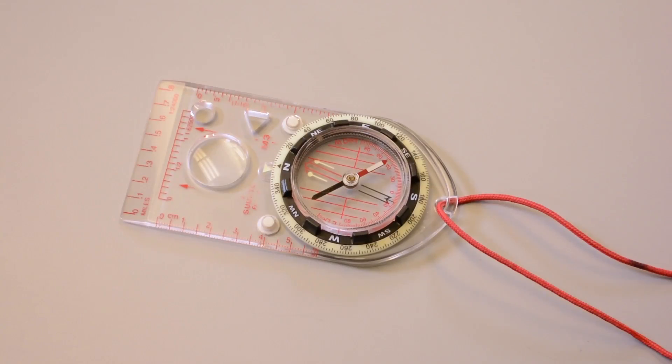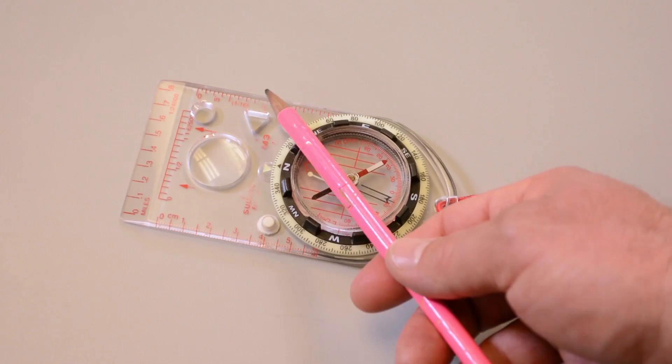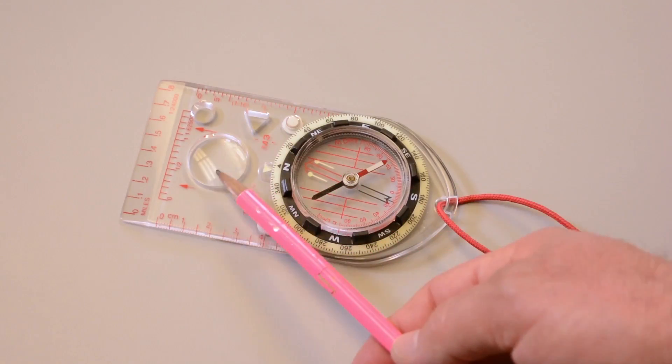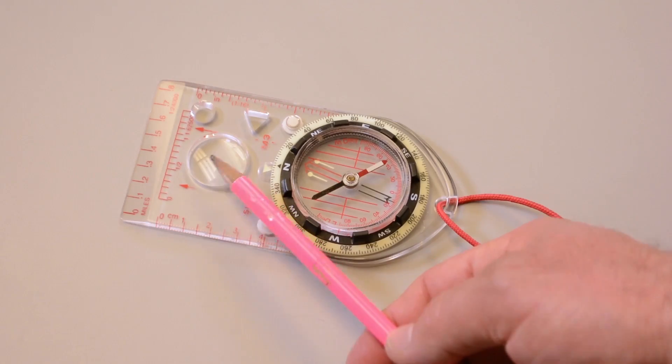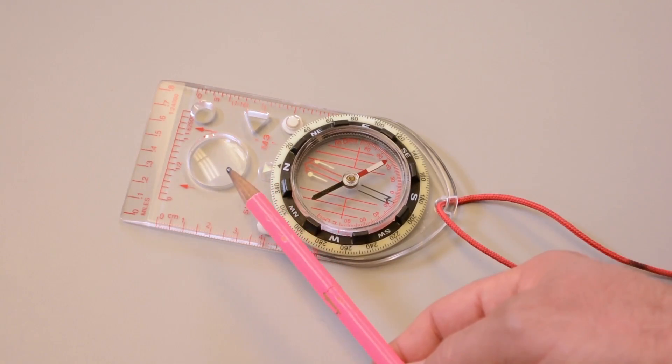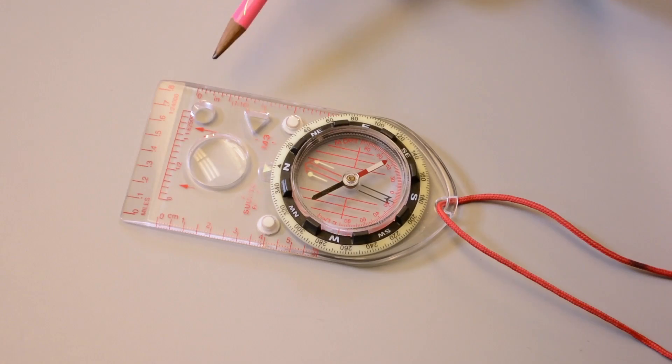On the two side edges of the base plate, we have a centimeter ruler and a one-inch ruler. In the center of the compass, we've got a small magnifying lens, which is very helpful for reading small map features. Here we've got a small circle and a triangle stencil that can be used to mark points on your map. Personally, I don't use them very much.